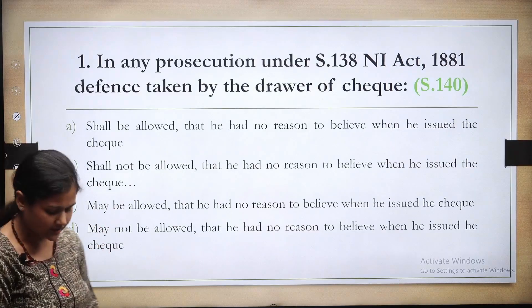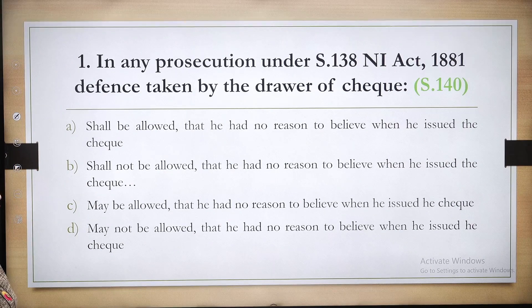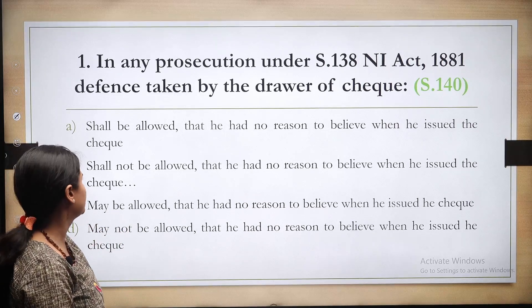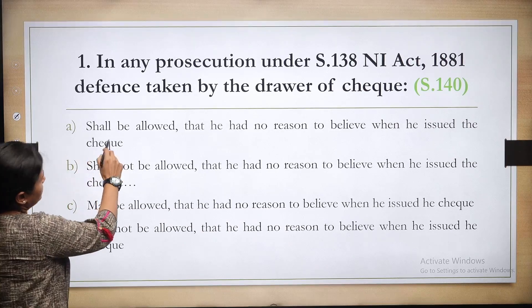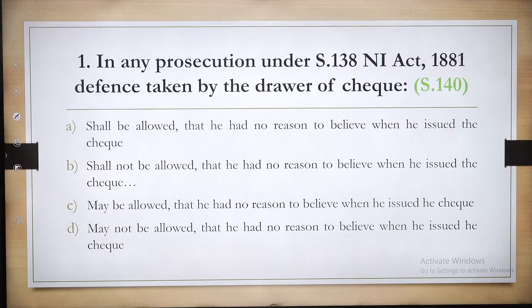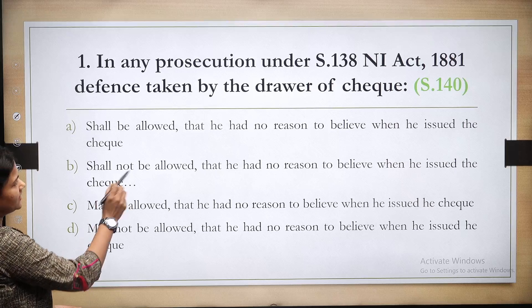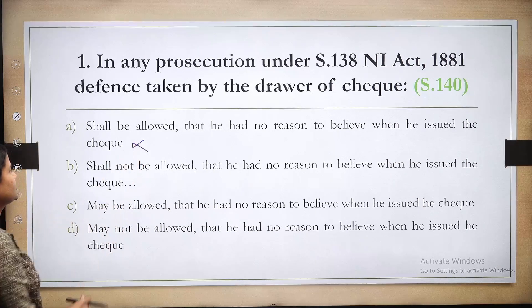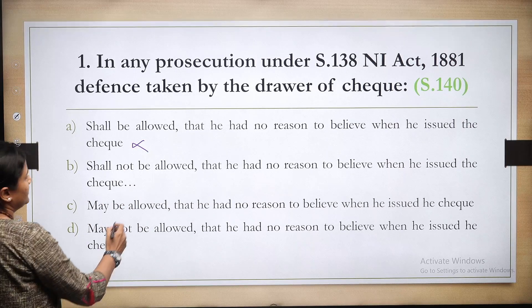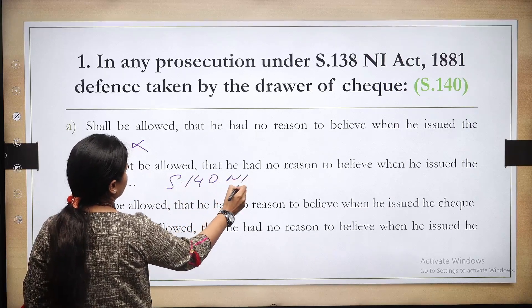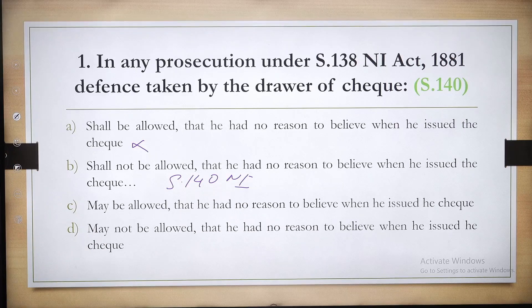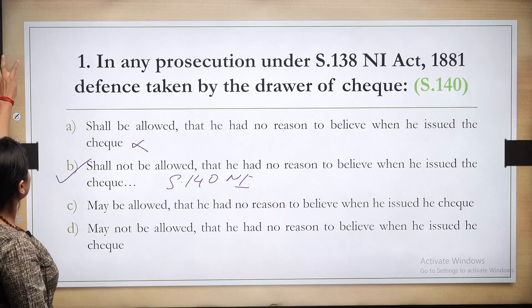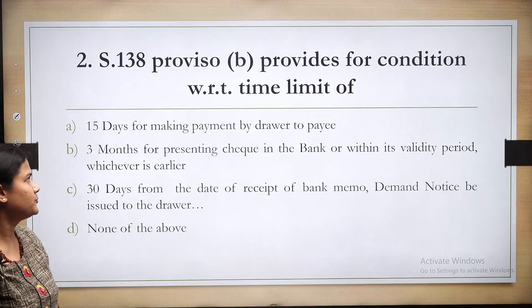First question: In any prosecution under section 138 of the NI Act, shall the defense taken by the drawer of the check — that he had no reason to believe when he issued the check — be allowed? According to section 140 of the NI Act, the drawer of the check cannot take the defense that he had no reason to believe when he issued the check. Hence the answer is option B: he shall not be allowed.